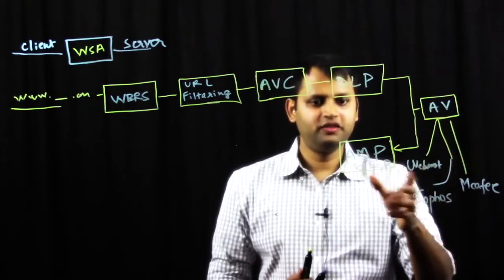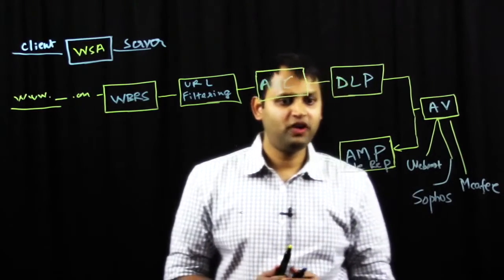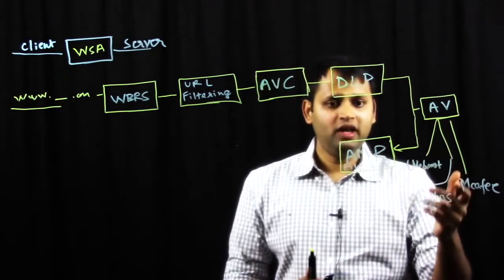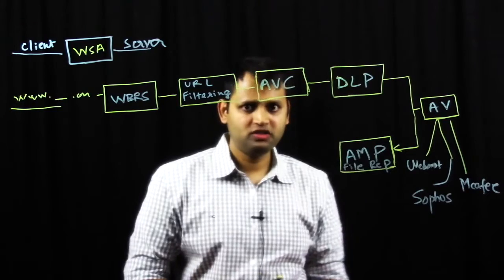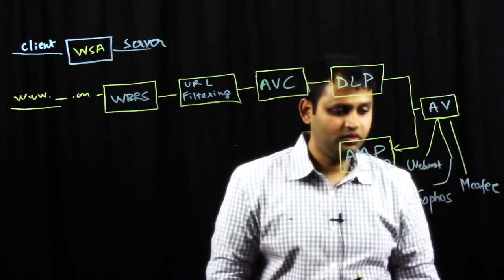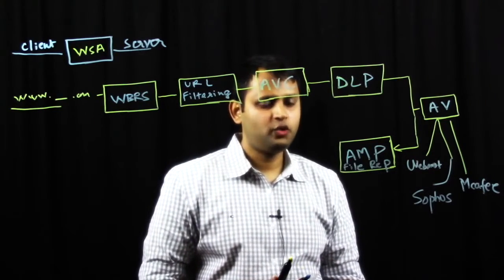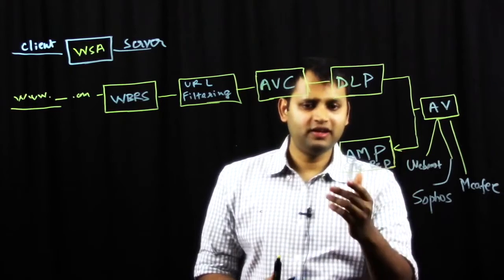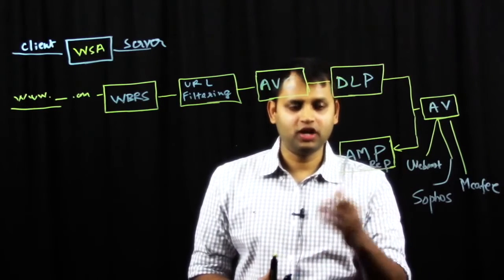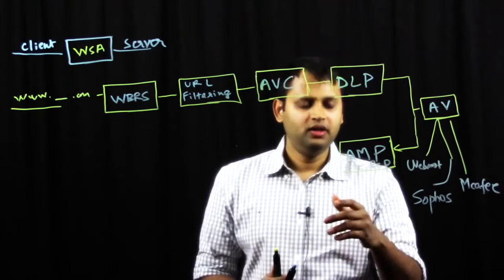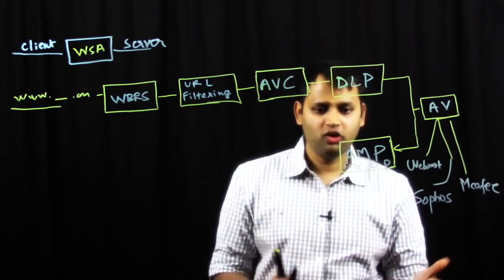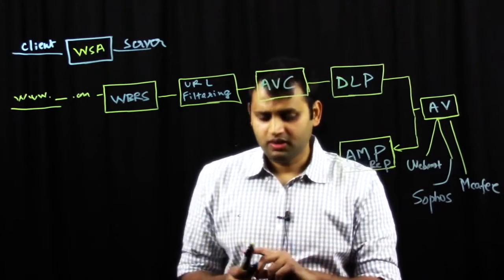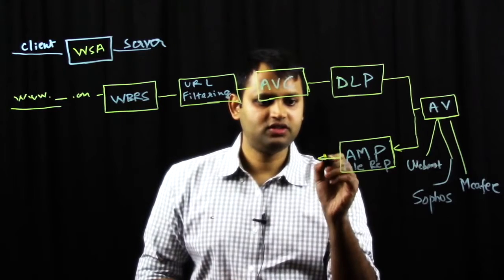Once this is done, this is basically a during phase. Next up, we have advanced AMP file reputation. So, any files that are allowed by AV, they could be still suspicious, they could be advanced malware files, and a good way to know this is querying our AMP database in the cloud. So, what happens is, a file comes in, we calculate the SHA-256 of that file, query the AMP cloud. AMP cloud could basically say, this is malicious, block this file, this is clean, let it go, or if it's suspicious, submit this file for further analysis, which brings us to the next filter.